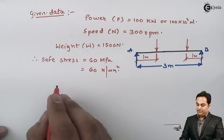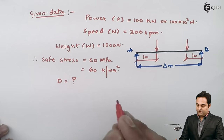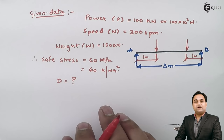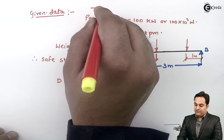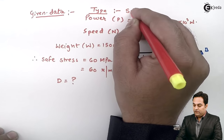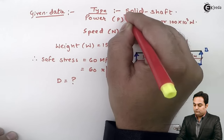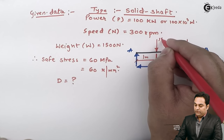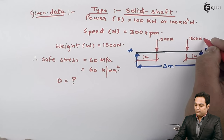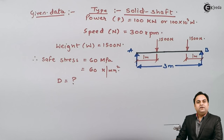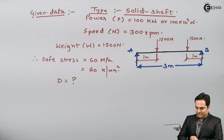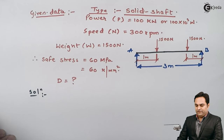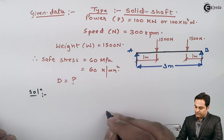We have to find the diameter of the shaft, which I will denote as D. Since nowhere in the problem is it stated that the shaft is hollow, this is a solid shaft. Let us now solve the problem. In the solution, I will explain it with a clearer diagram — here I would be drawing a 3D diagram.